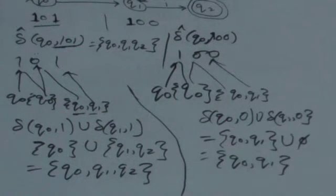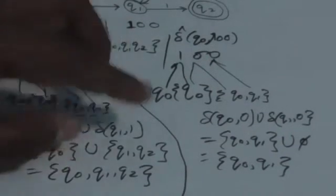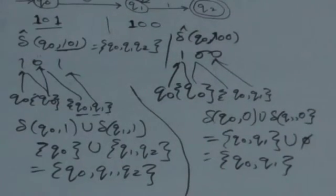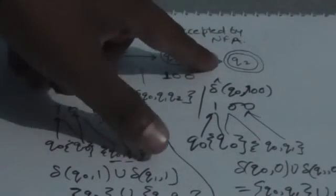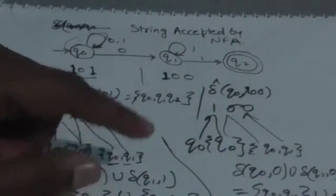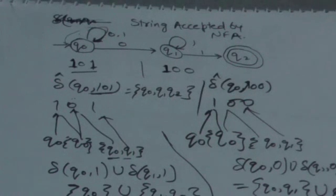In this case the output set does not contain any final state. There is only one final state in this NFA, which is Q2, and it is not present in this set. Therefore, the string 100 would be rejected by this NFA — it would not be accepted.